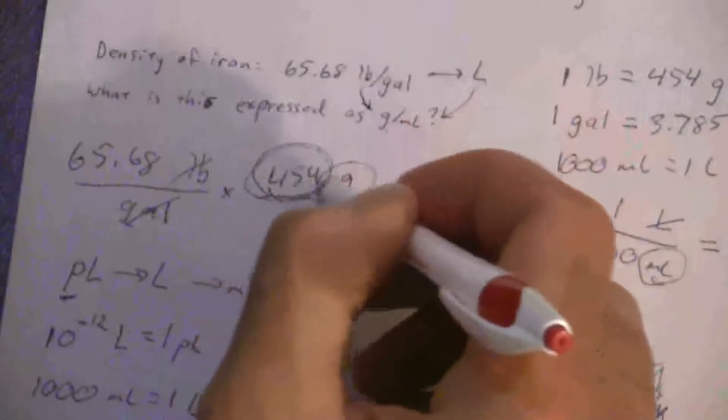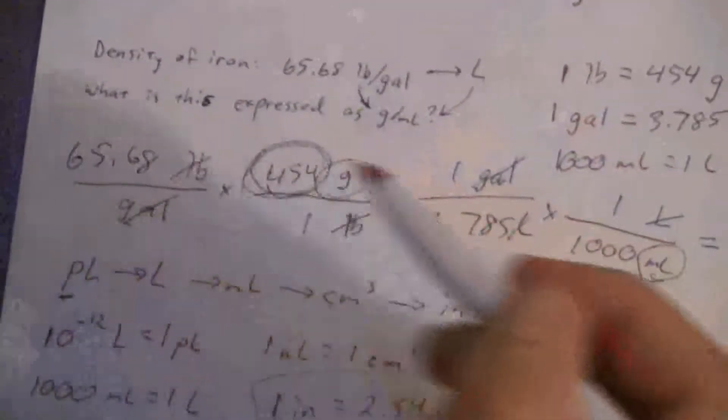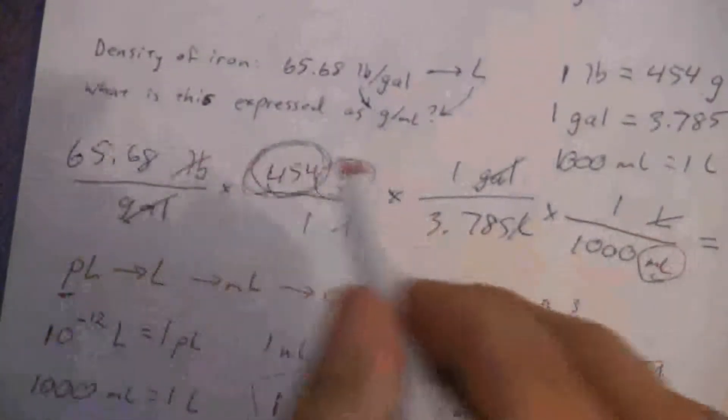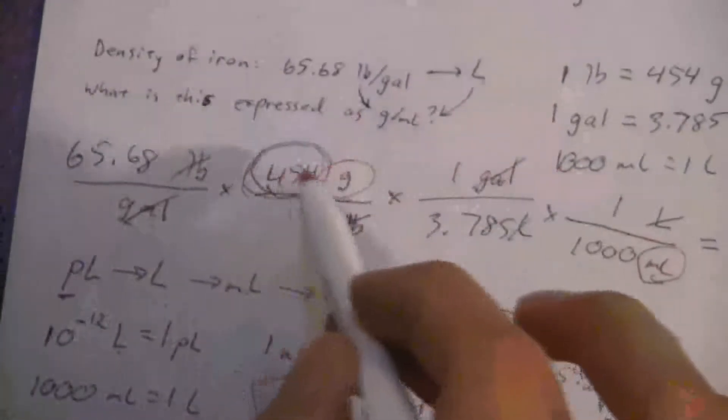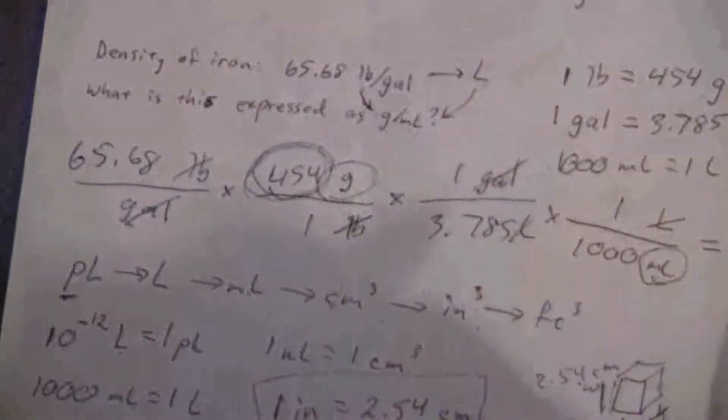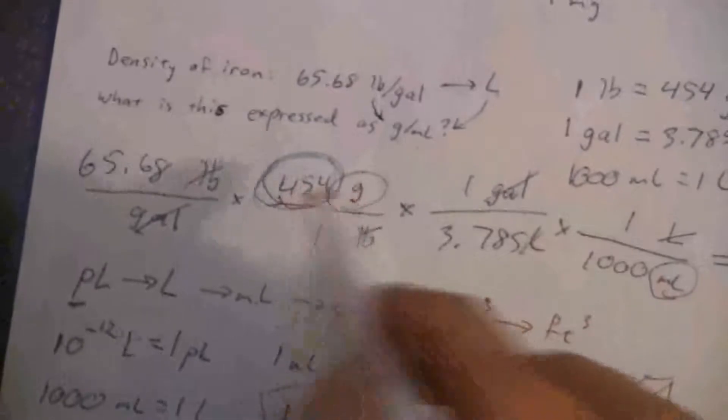Now I was given 4 significant figures, and if this were a Chem 21 question you would stick with 4, even though you use 454 here. Really what I should have done is found this conversion factor to at least one or two more decimal places, and then I'd have less rounding errors.